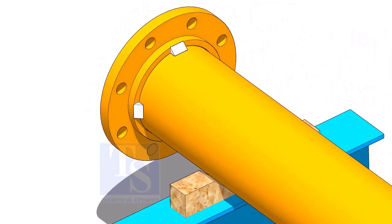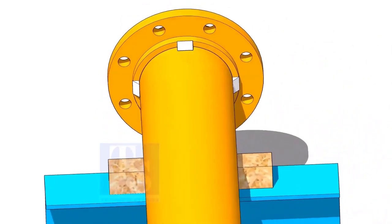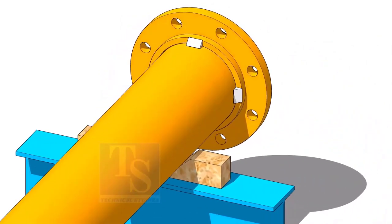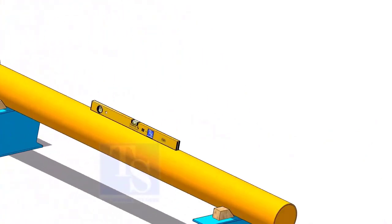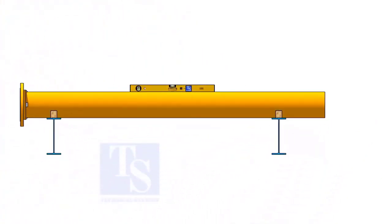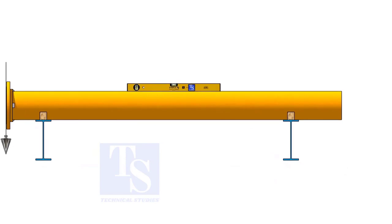Tack weld on both sides of the flange. Now, correct the level of the pipe.